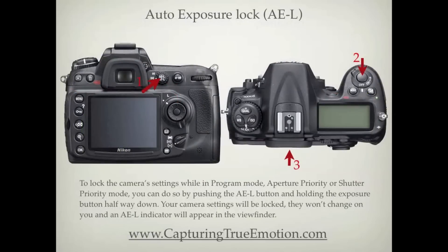To lock the camera settings while in program mode, aperture priority, or shutter priority mode, you can do so by pushing the AEL button and holding the exposure button halfway down. Your camera settings will be locked, they won't change on you, and an AEL indicator will appear in the viewfinder.